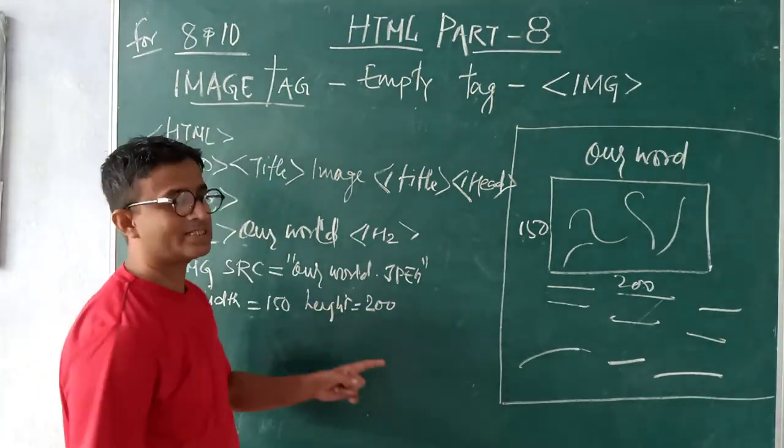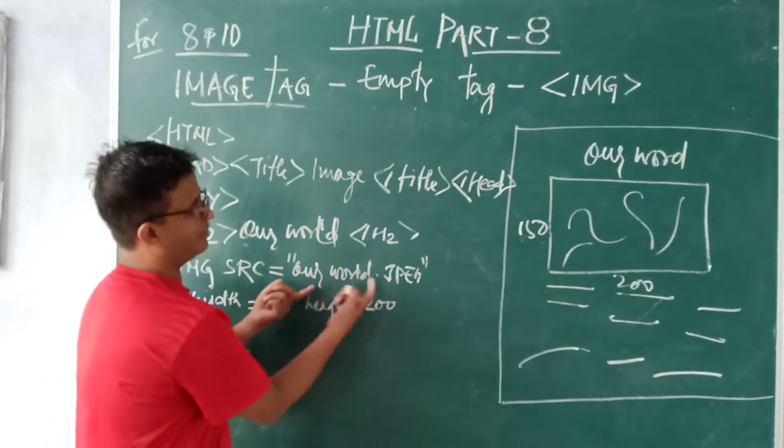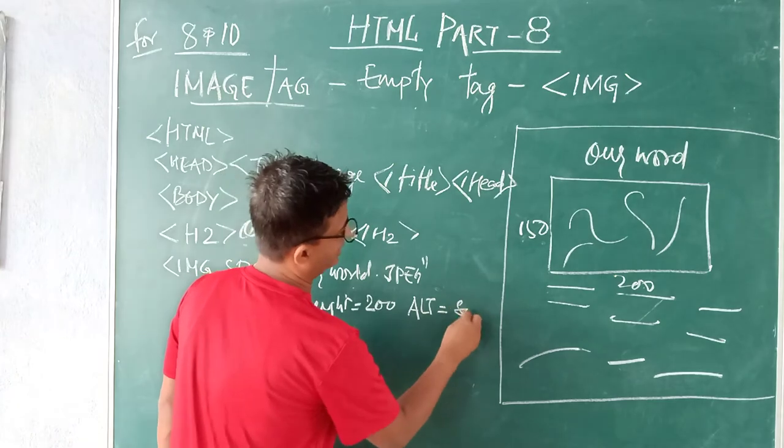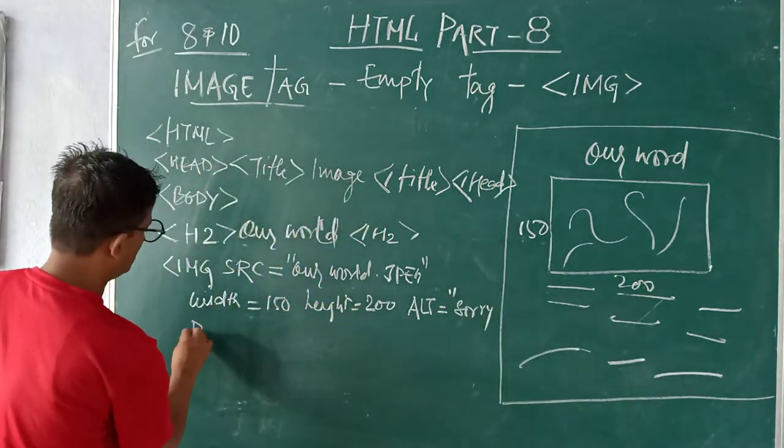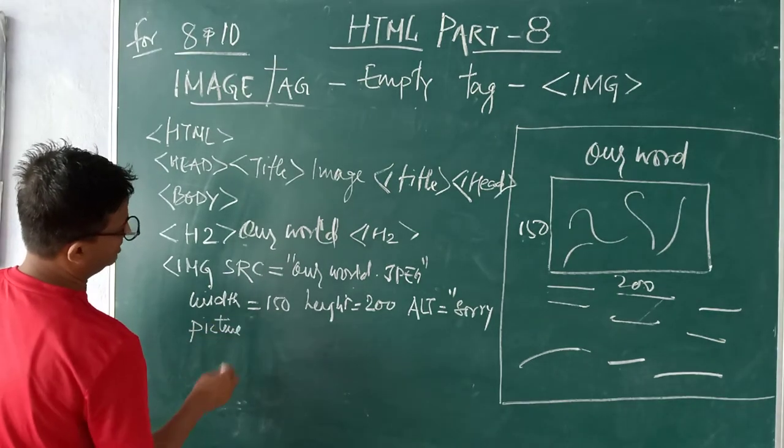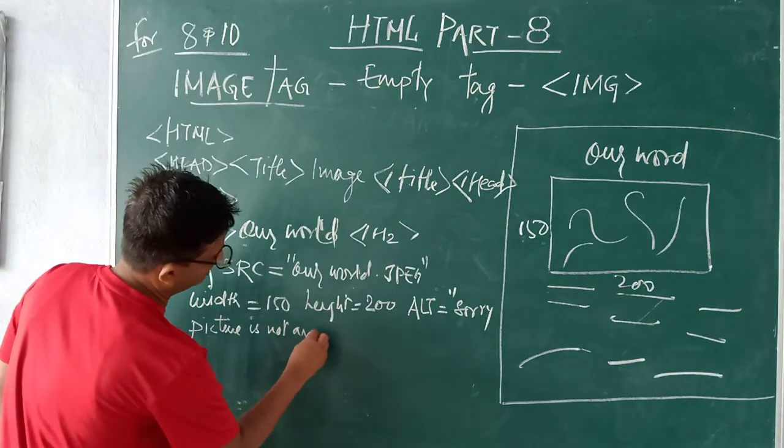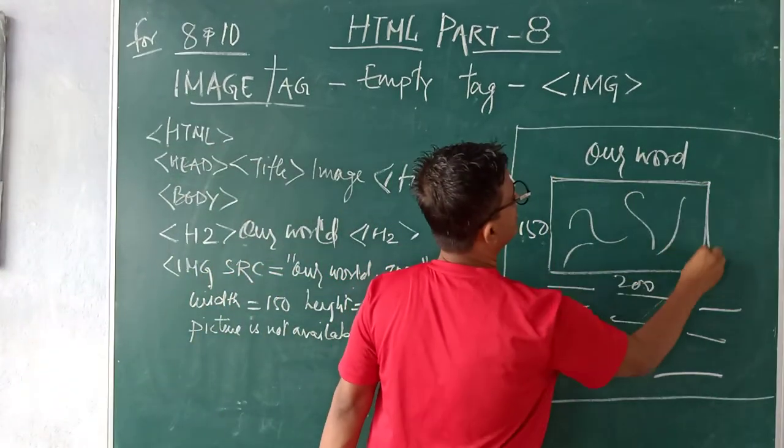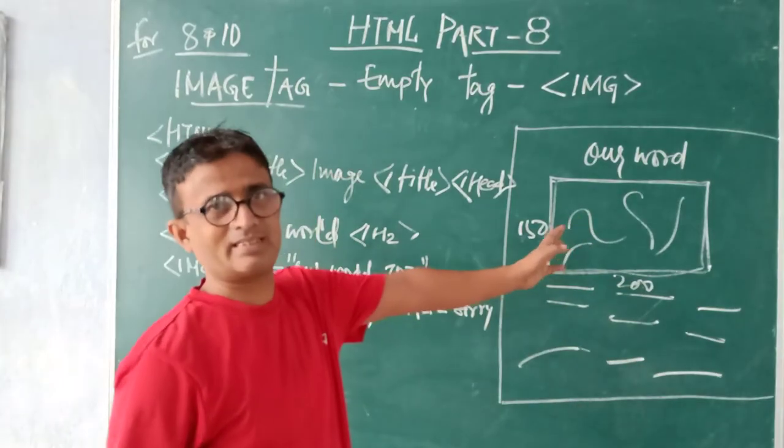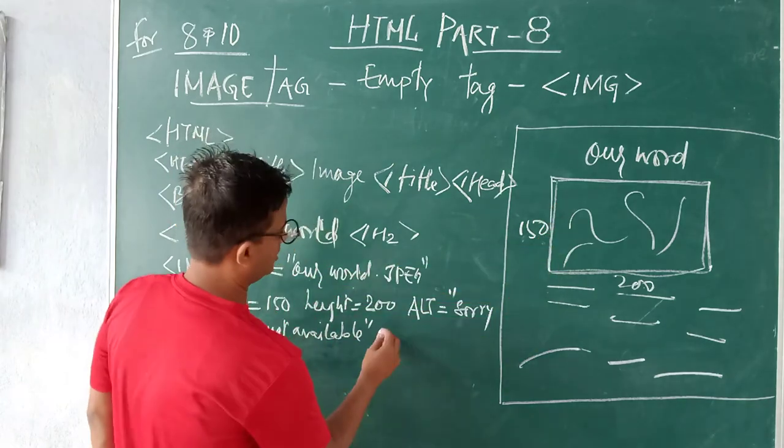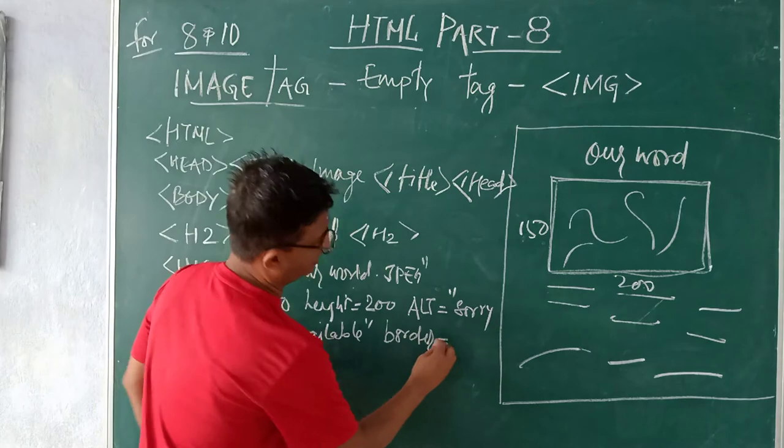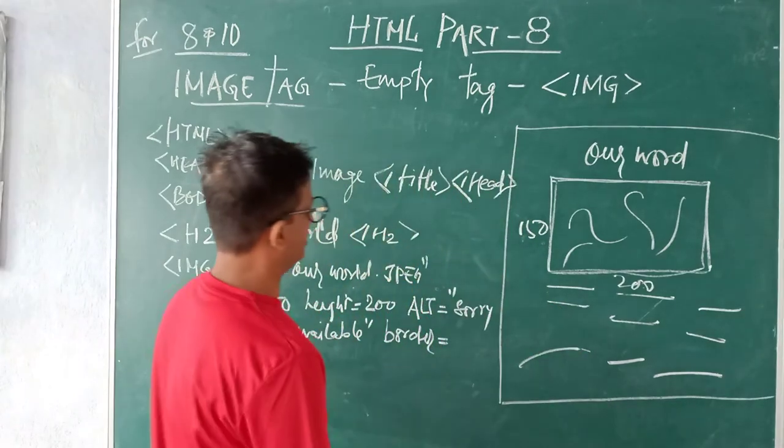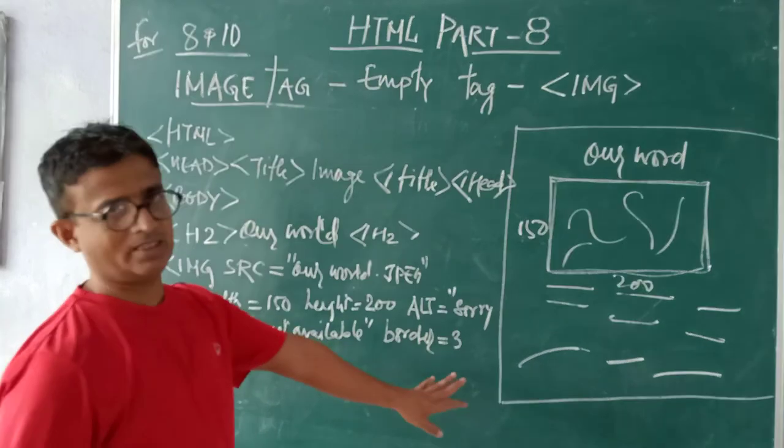Next is ALT. Suppose this is 'our world' picture and it's not available here. Once you give the message I told you, you will write ALT and one message: 'sorry, picture is not available.' This tag is open. Now you want to put one border around this image. So you will write border equals its value, which must be between 1 to 5. I am putting here border equals 3. Now the IMG tag is over, closing.